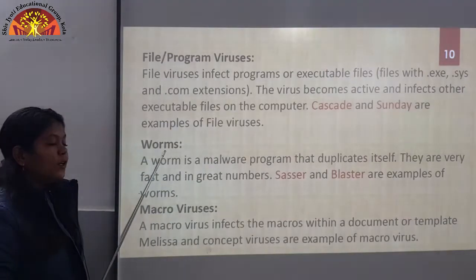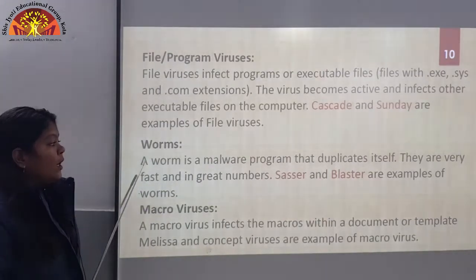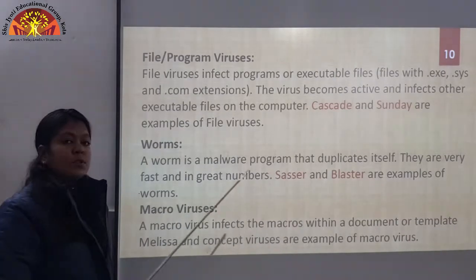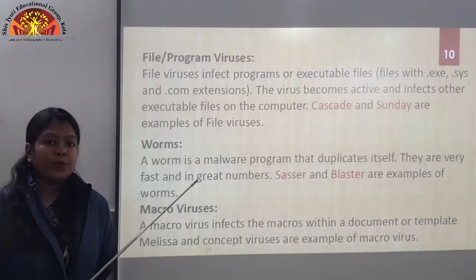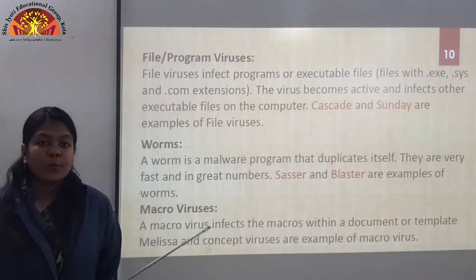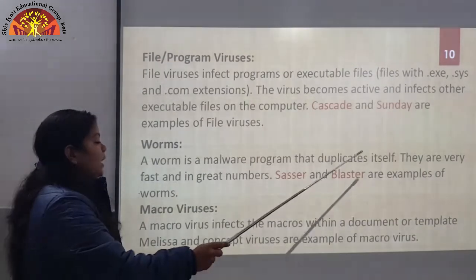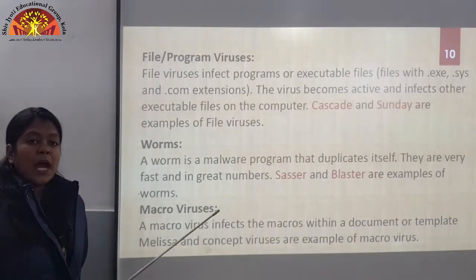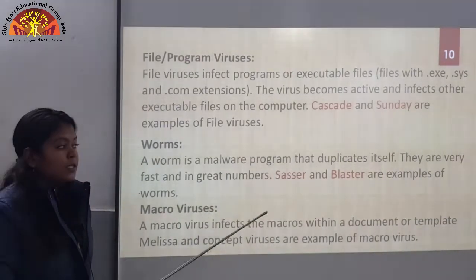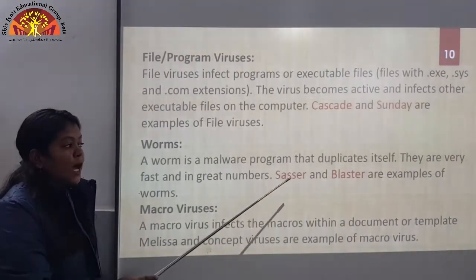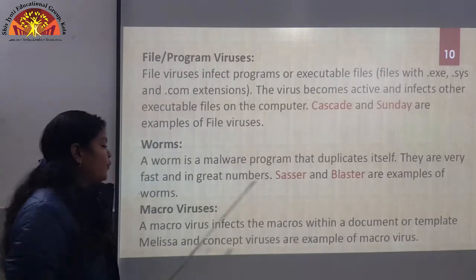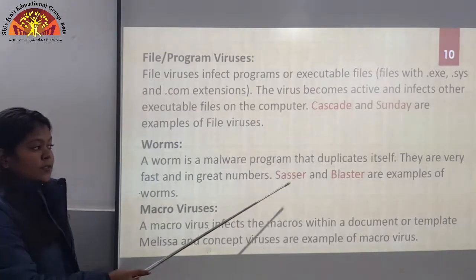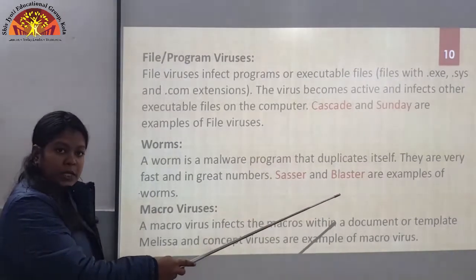The next category is worms. A worm is a malware program that duplicates itself — it creates its own duplicate copies. They are very fast and great in numbers. Cesar and Blaster are examples of worms.